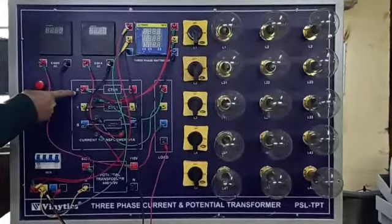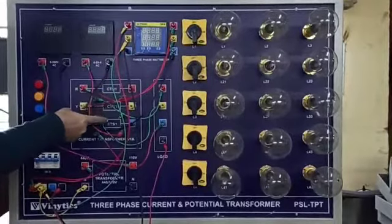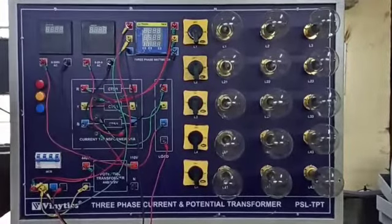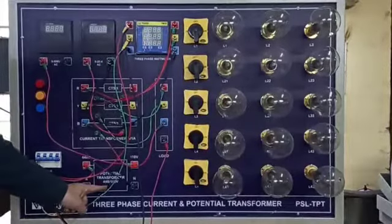As you can see, R, Y, B CT, 5x1, 5x1, 5x1. There are three CTs that are put in this panel and there is one potential transformer.